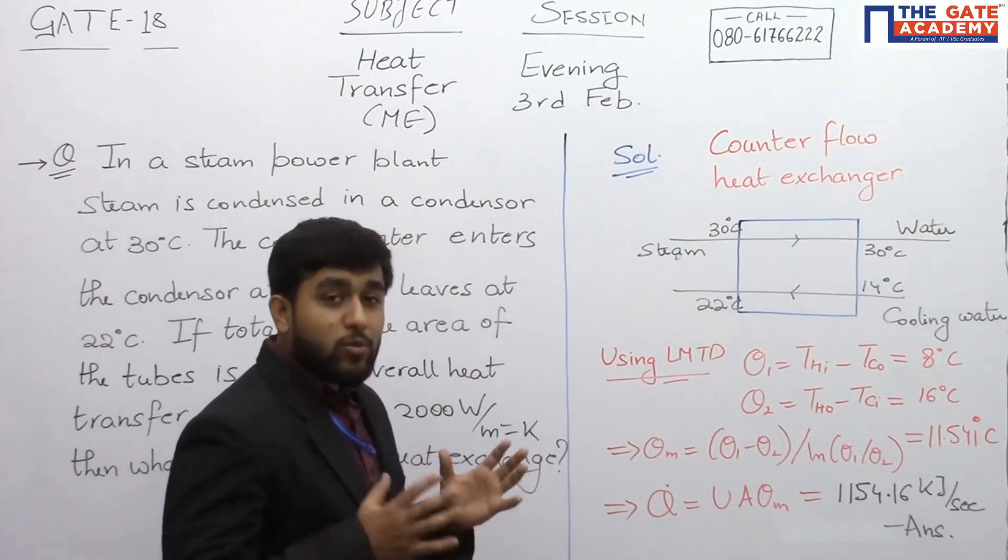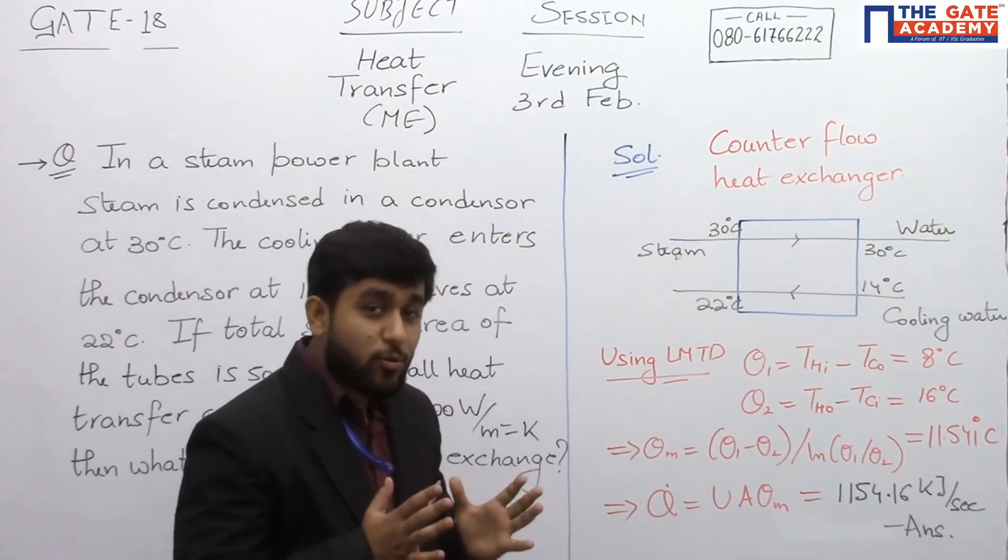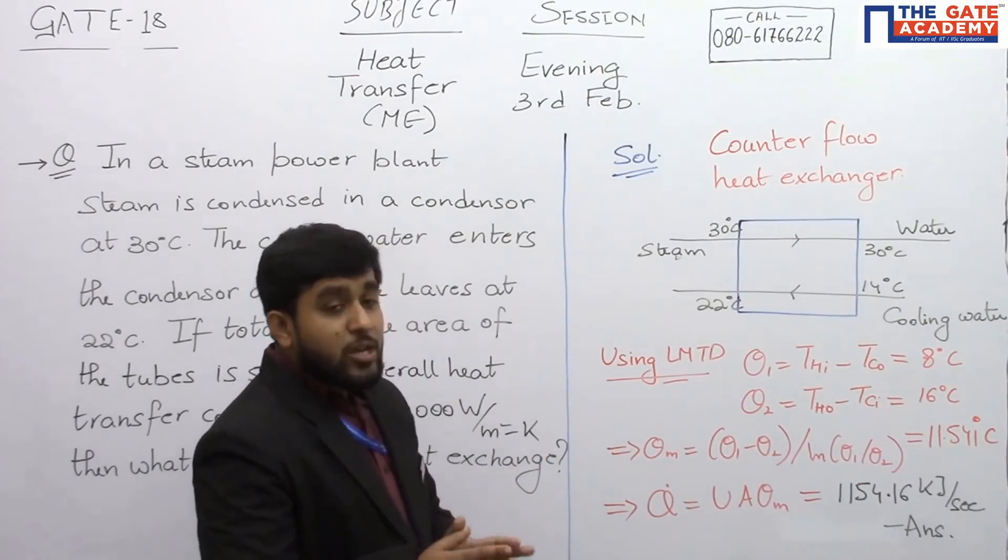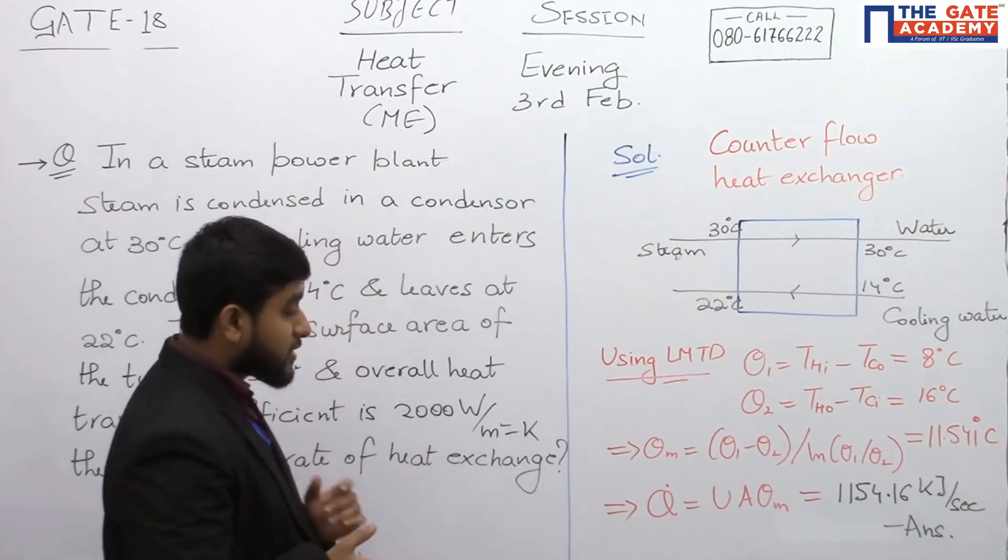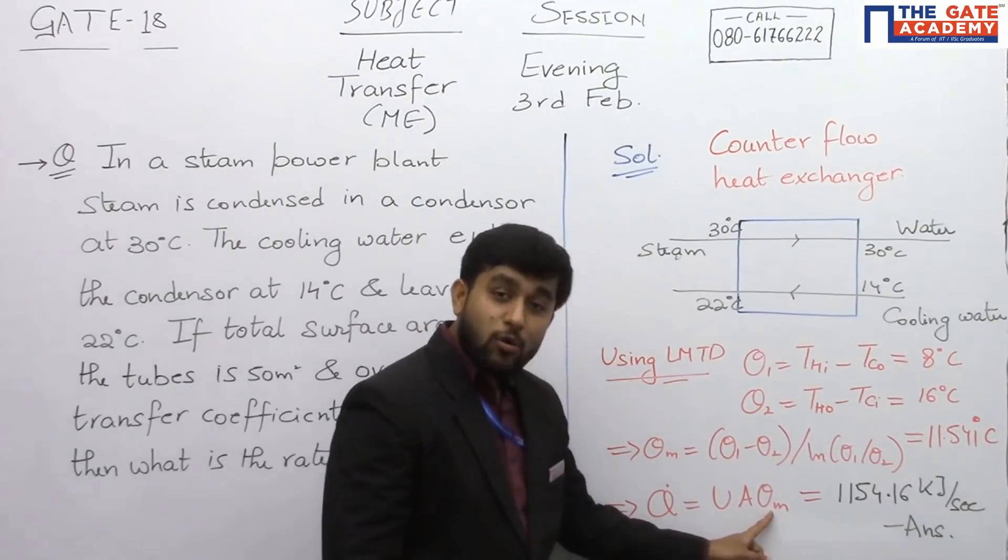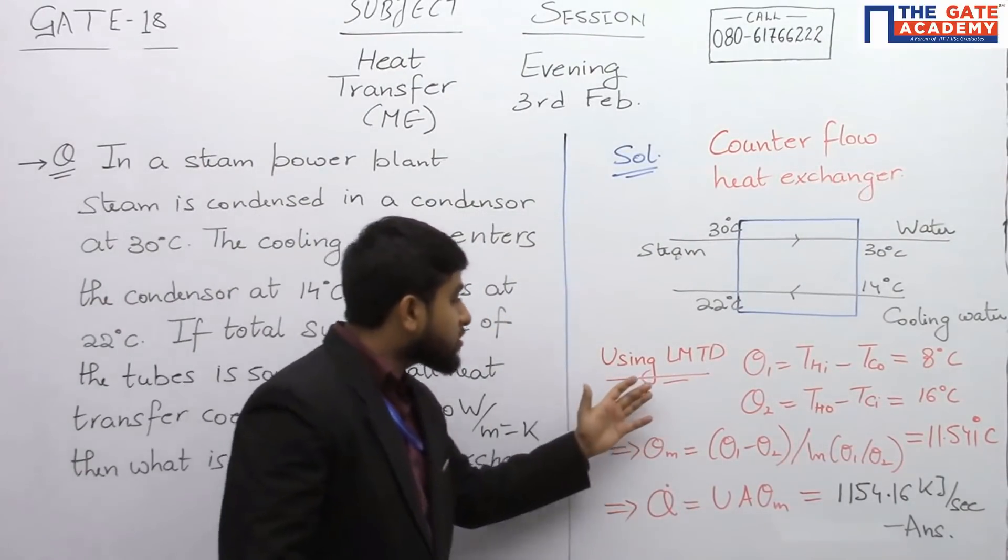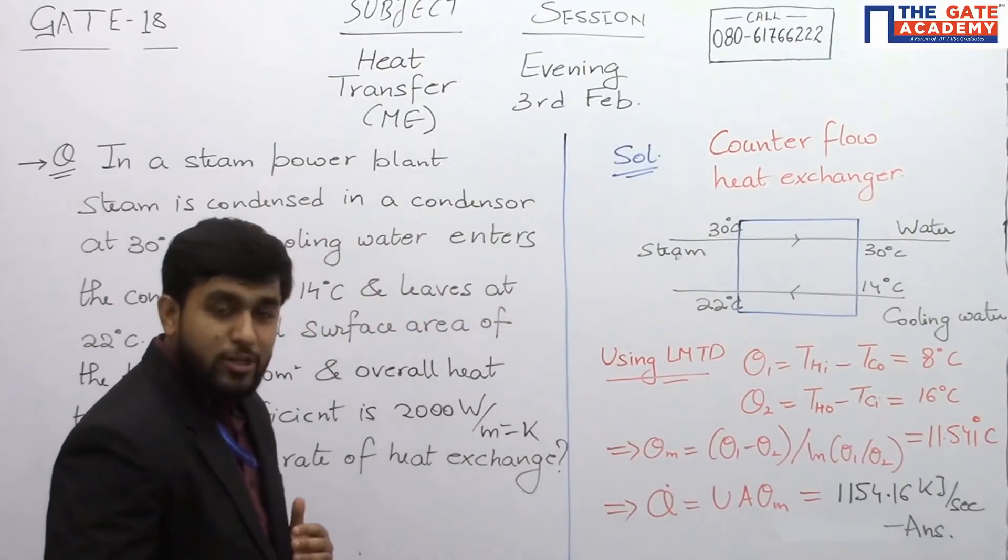But for solving this, we need the mass flow rate. Then only we can find out the rate of heat exchange. But in this case the mass flow rate is not given to us. So instead of that, since U is known to us, A is known to us, if somehow we are able to find out the mean temperature difference, we will get the heat transfer rate also. So for this we will use LMTD method.